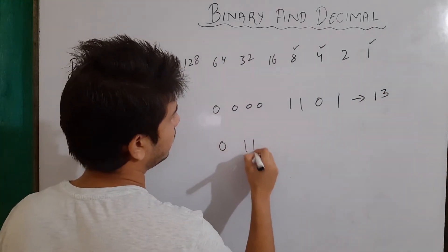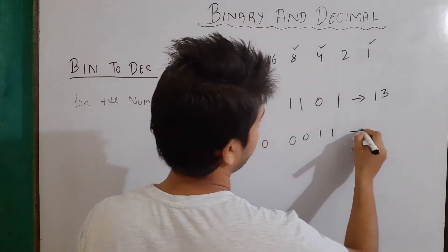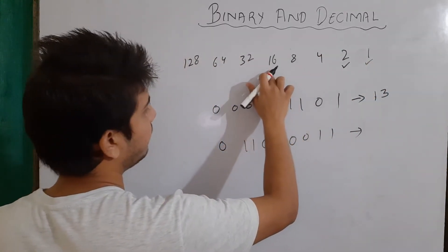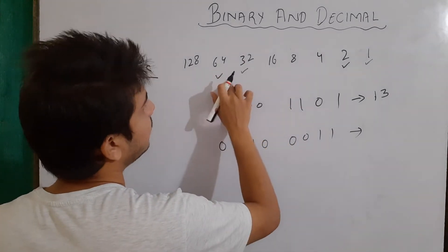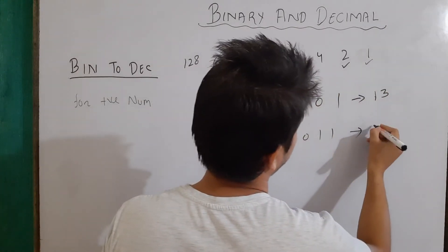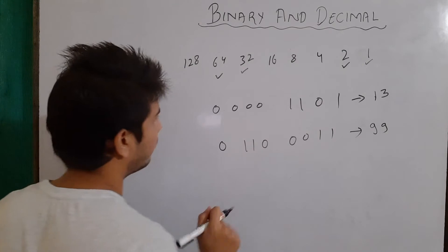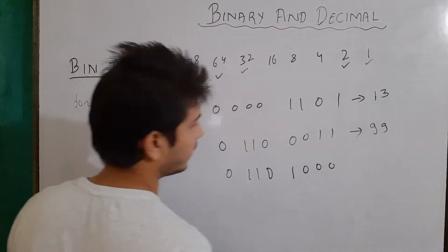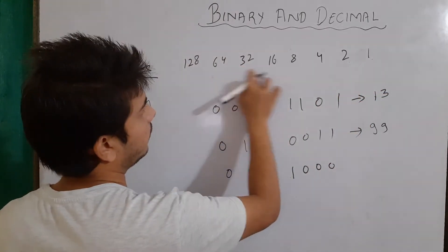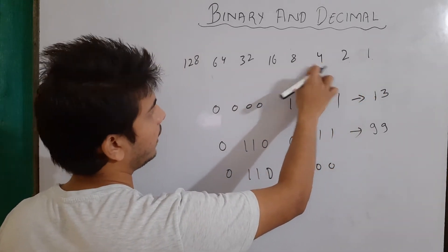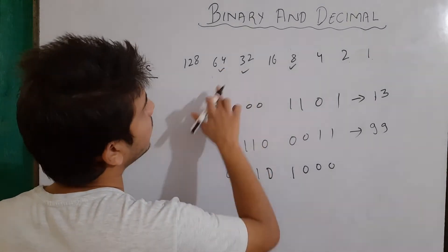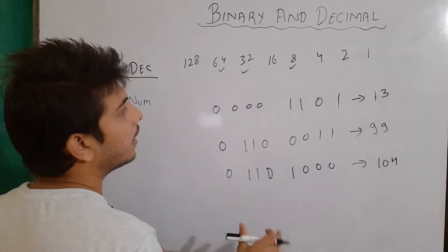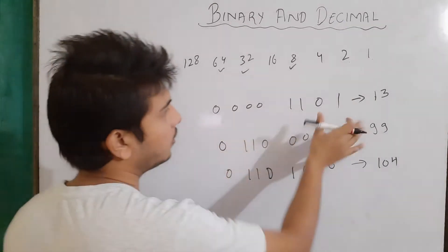Let's take another example: 0 1 1 0 0 0 1 1. We mark the positions with a 1: 64, 32, 2, and 1. Adding them: 64 plus 32 is 96, plus 2 is 98, plus 1 is 99. So the decimal equivalent is 99. For another binary number where the marked values are 64 and 8 plus 32, we get 64 plus 32 plus 8 equals 104. This is how we convert binary to decimal form.